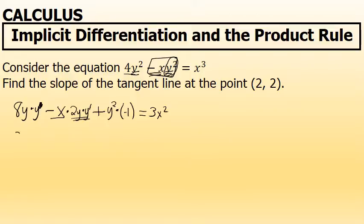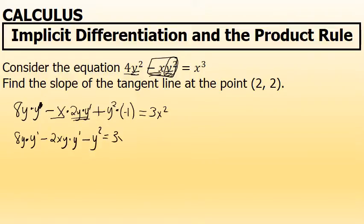I'm going to clean things up a little bit. I'll write this derivative as 8y times y prime minus 2xy times y prime minus y squared equals 3x². That involved multiplying negative x by 2y and writing the coefficient first, and then writing y squared times negative 1 as negative y squared.